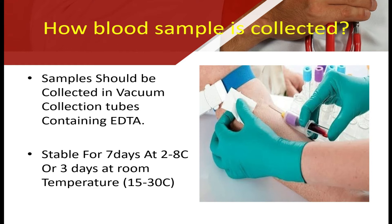How is the blood sample collected? The blood sample is collected using a vacuum device with EDTA. It is usually stable for 7 days at 2 to 8 degrees Celsius, whereas it is stable for 3 days at room temperature.